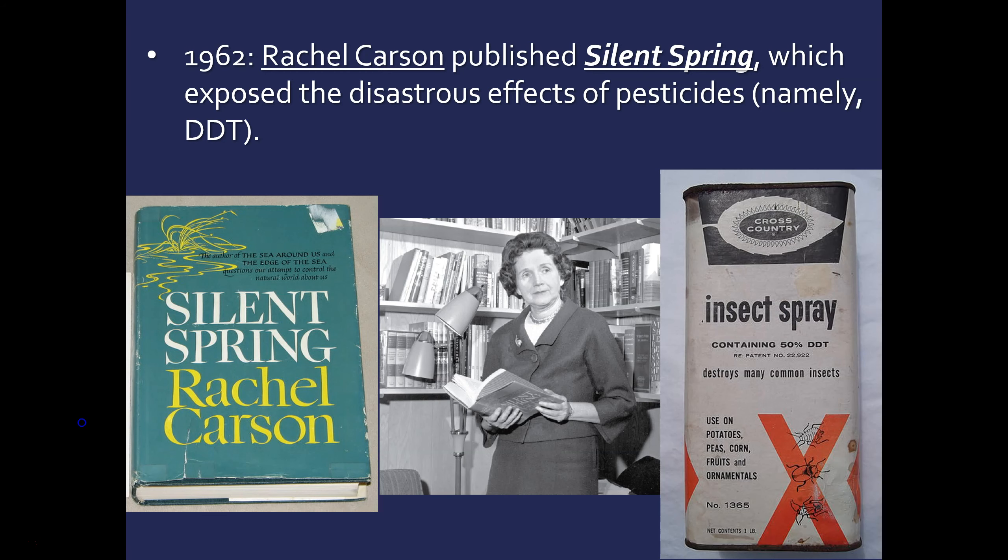We're going to begin with a book written in 1962 by a woman named Rachel Carson called Silent Spring. This book was all about how pesticides were being used extensively across America, and these pesticides were having very awful effects on wildlife, particularly birds — which is why the book was called Silent Spring. One of these pesticides, DDT, when consumed by birds, caused their eggs to be very weak, so a lot of birds never hatched.